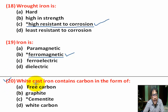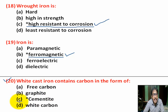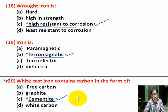Question number 19: White cast iron contains carbon in the form of — Option A: carbon. Option B: graphite. Option C: cementite. Option D: white carbon. Correct answer is Option C — cementite.